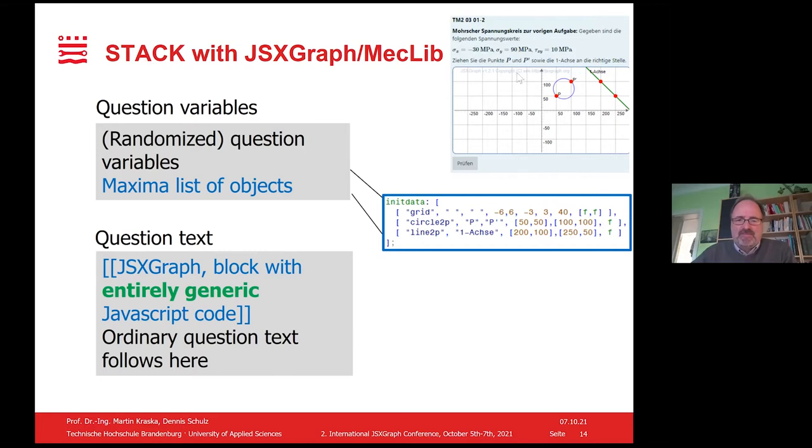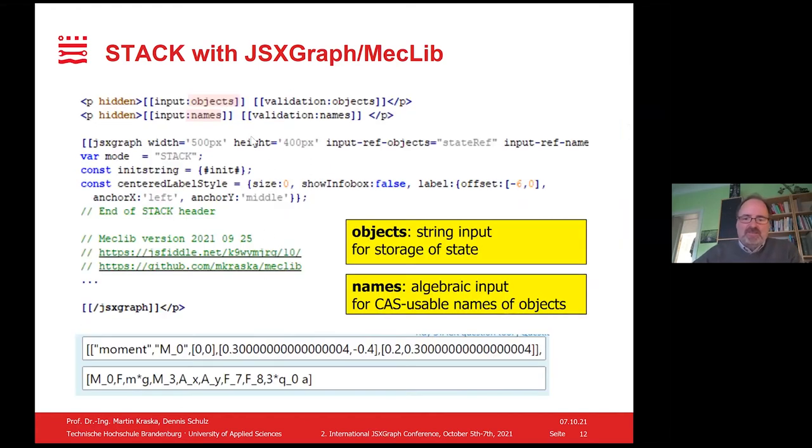And now what we do is we have a problem independent, entirely generic JavaScript code block in the question text. And the content of the widget is driven by a Maxima list of objects. And the list of objects, as you can see here in the blue box, this is the grid, the control of how big the widget is and what is the scaling of the box. And then you have a circle driven by two points and you have a line driven by two points with appropriate parameters. That's the way how I control it. And the JSXGraph block has to be able to handle such input. And this generic block, I called it MecLib, mechanical engineering library.